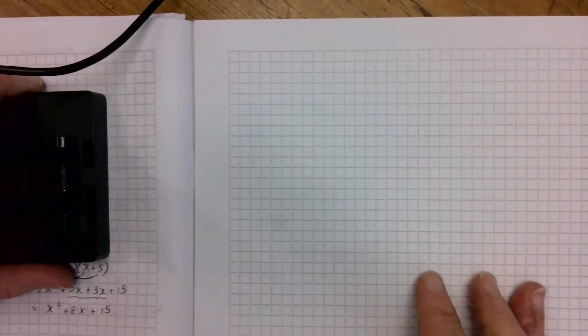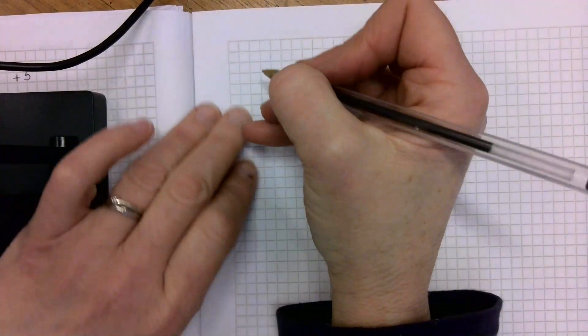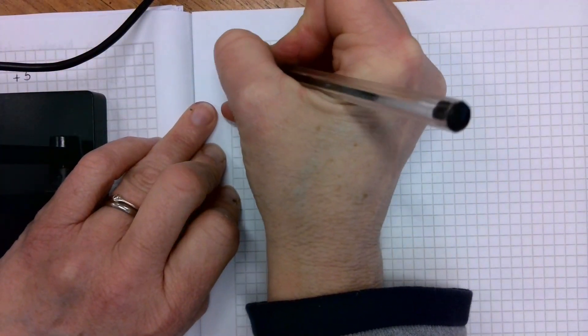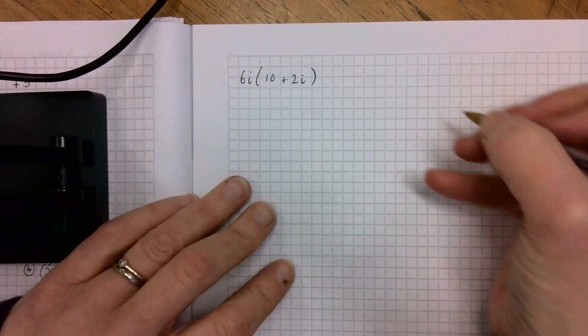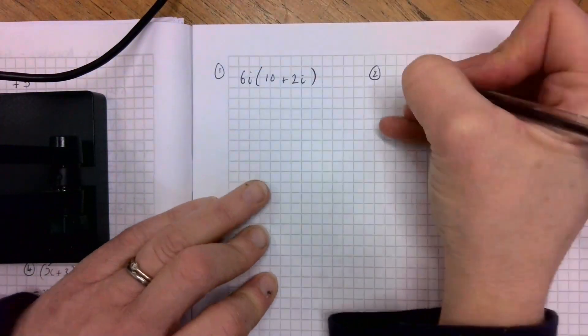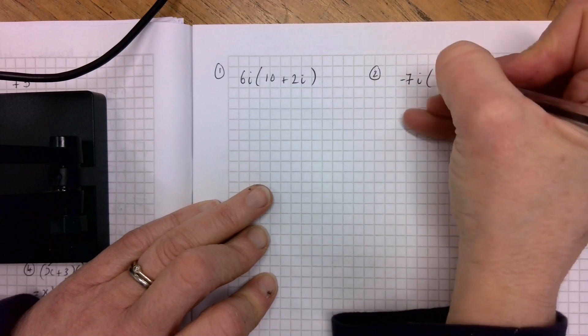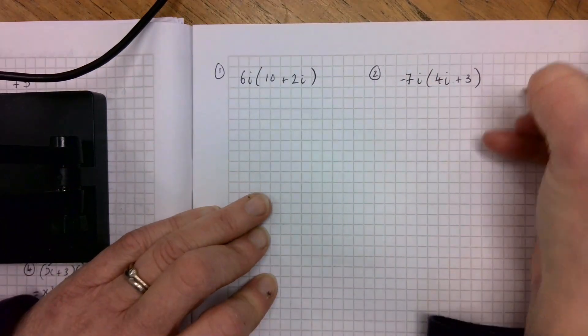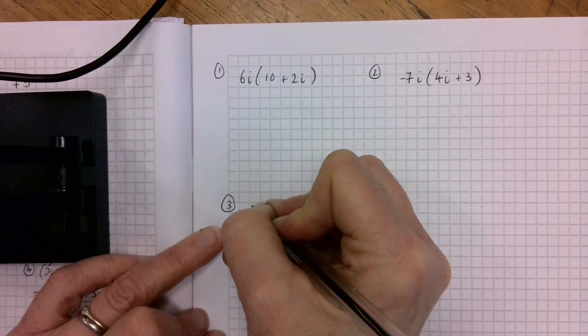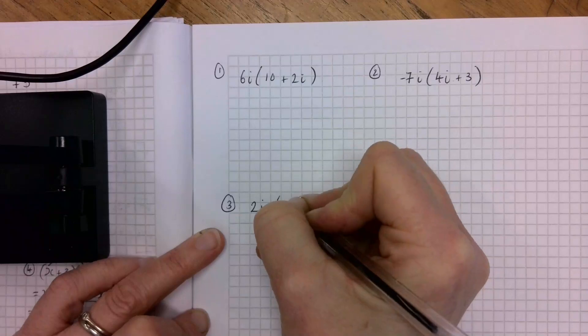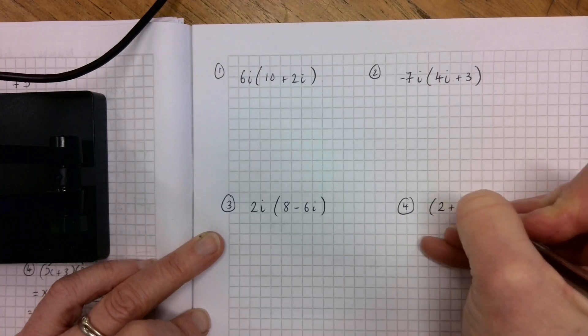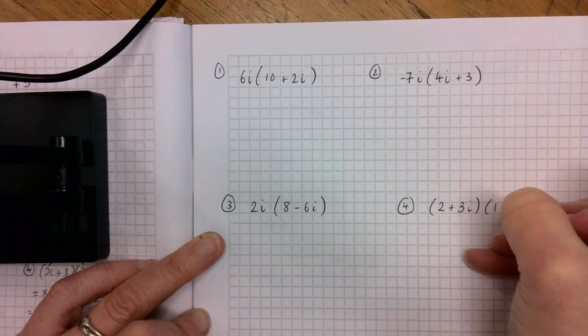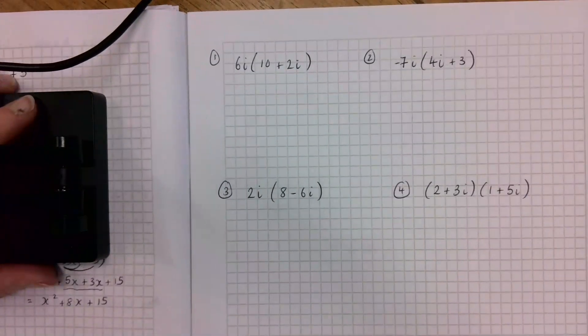Let's do a couple more together. I'll give you a minute or two to try them, and then I'll work them through. And then I'll put you on the work in the textbook. So here's a couple more. Let's go with 6i by 10 plus 2i. The second one, minus 7i by 4i plus 3. And the third one, we'll do 2i by 8 minus 6i. And then the fourth one, we'll do a nice nasty one for the fourth one. So try those four. See how you get on.